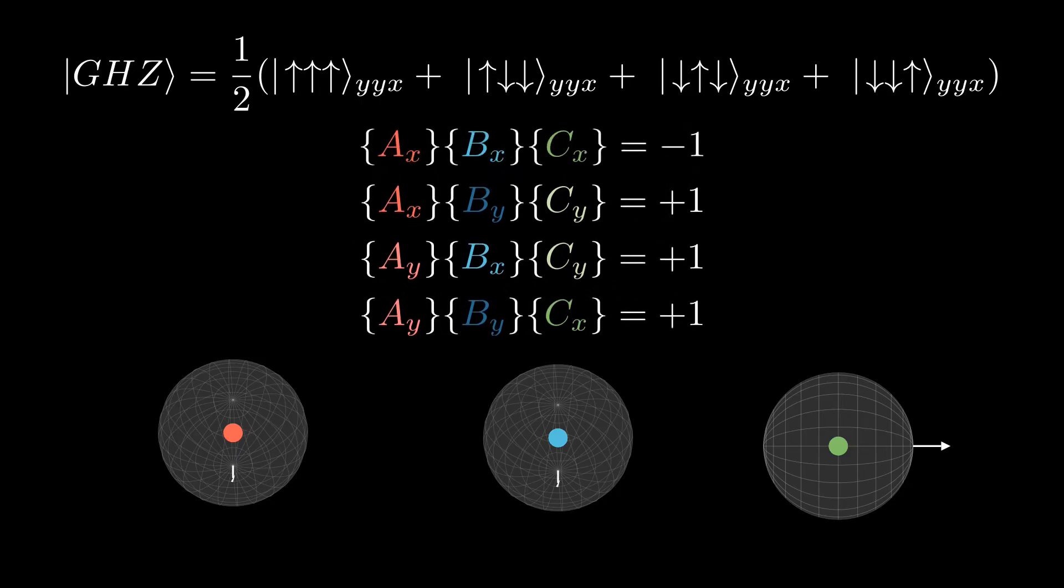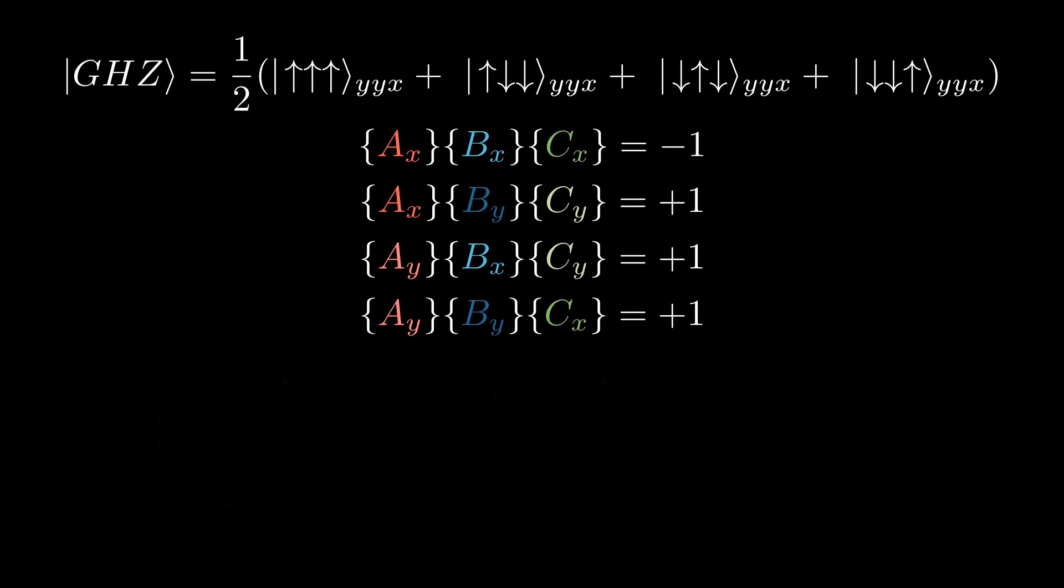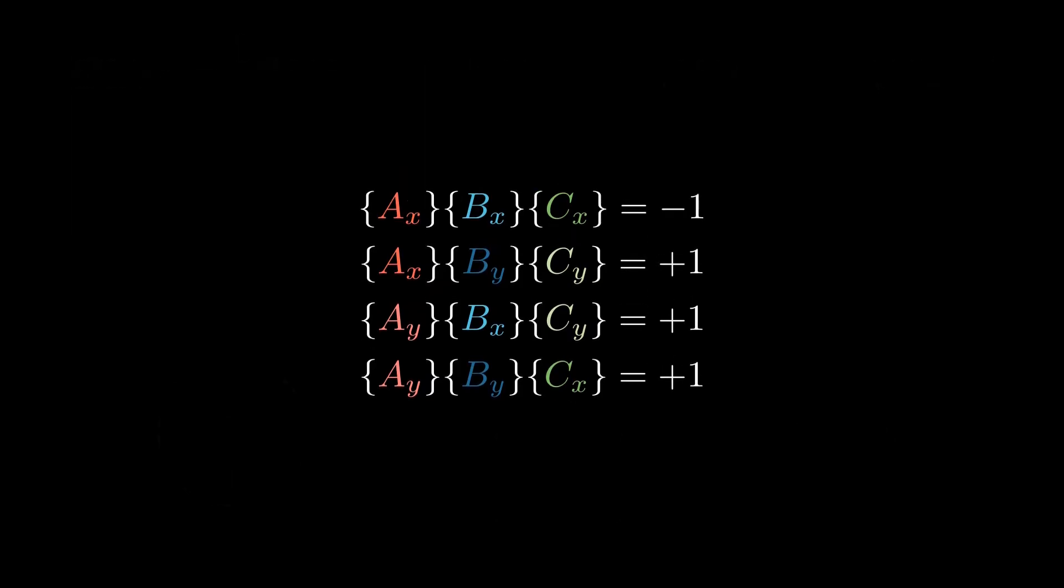Let's bring back the first equation from earlier. And these are the predictions that the math of quantum mechanics makes for how the GHZ state is going to deflect given these orientations.